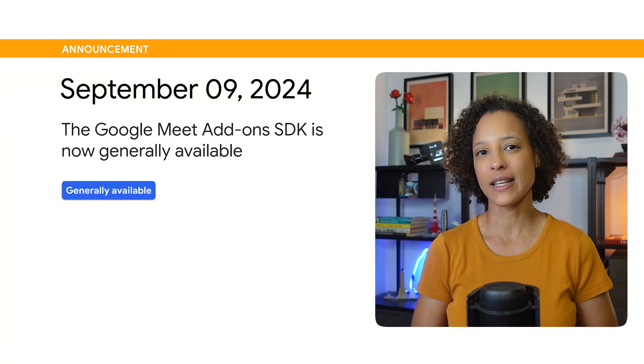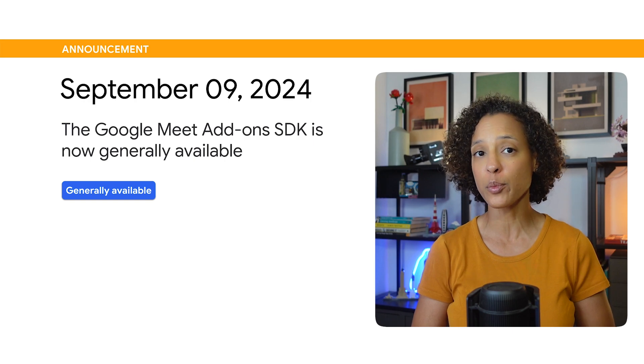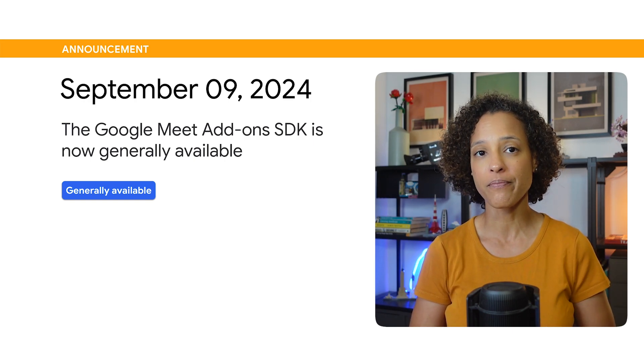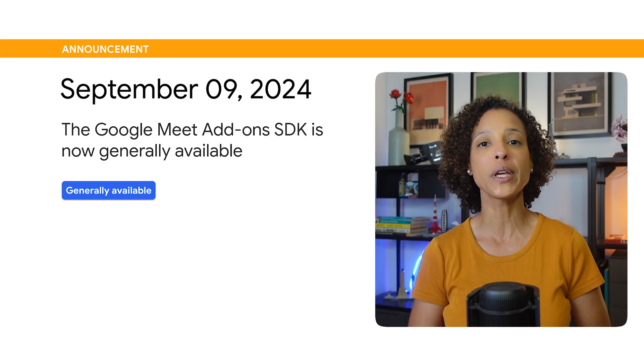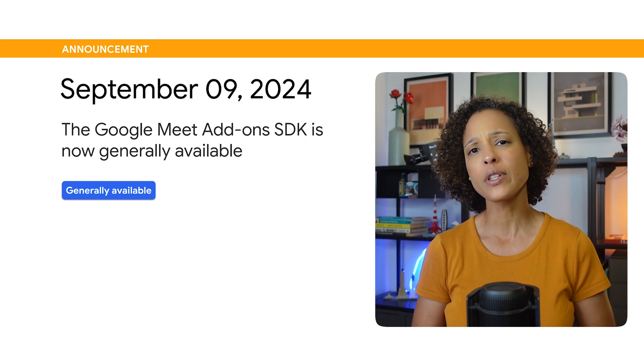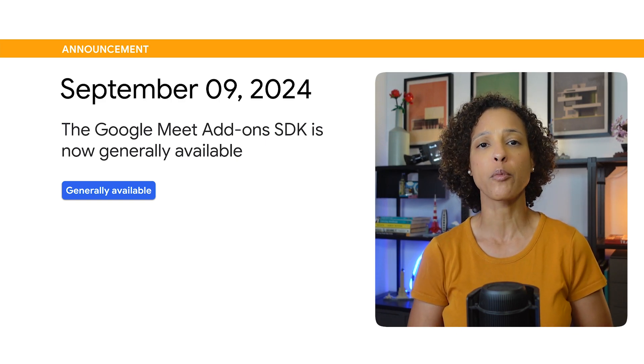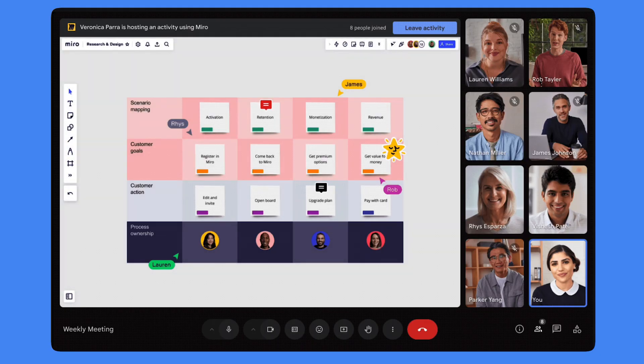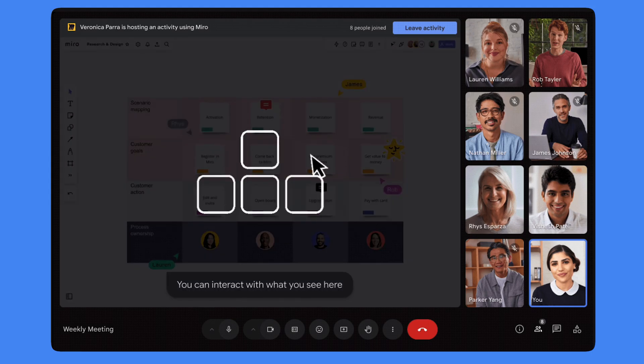The Google Meet Add-ons SDK has graduated from the Developer Preview Program and is now generally available. This SDK lets you embed your app into Google Meet as an add-on where users can discover, share, and collaborate in the app without leaving Meet. The add-ons SDK expands Meet's existing platform capabilities, providing the opportunity for developers to build interactive and collaborative experiences for users in Google Meet, which they can find and install from the Google Workspace Marketplace. Check out the developer documentation linked in the description to get started with creating your own Google Meet add-ons.